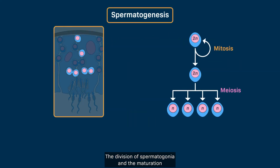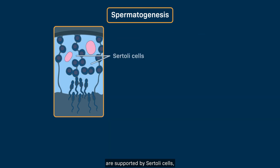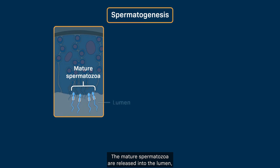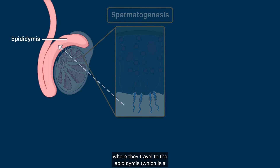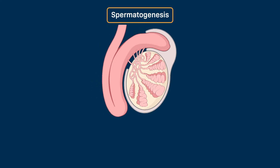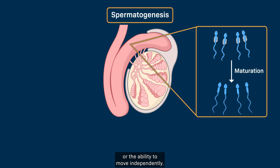The division of spermatogonia and the maturation of spermatids to form spermatozoa, or sperm, are supported by Sertoli cells, which are located inside the seminiferous tubules. The mature spermatozoa are released into the lumen, or fluid-filled cavity, of the seminiferous tubules, where they travel to the epididymis, a coiled tube attached to each testis. Spermatozoa are stored inside the epididymis and undergo further maturation to gain motility, or the ability to move independently.